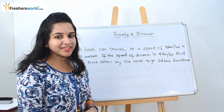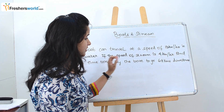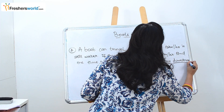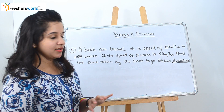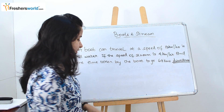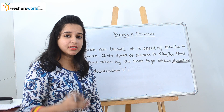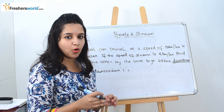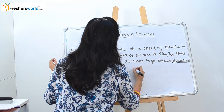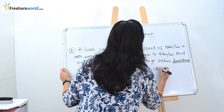The second question: a boat can travel at a speed of 13 kilometers per hour in still water. If the speed of the stream is 4 kilometers per hour, find the time taken by the boat to go 68 kilometers downstream. To find the time taken, we are given the distance, so first we need to find the speed. Downstream speed is the addition of the boat speed and the stream speed: 13 plus 4 is 17 kilometers per hour.